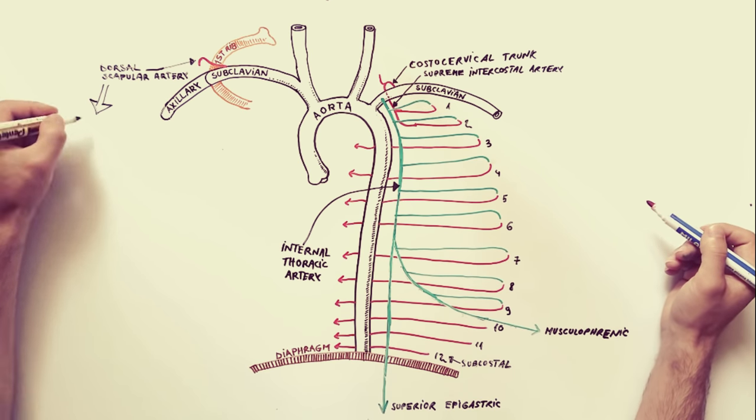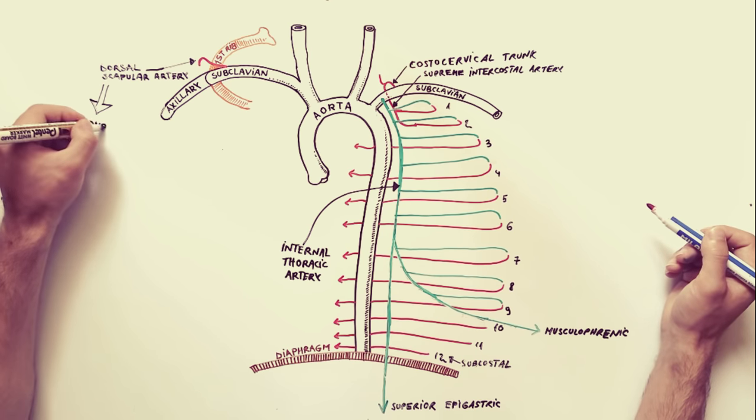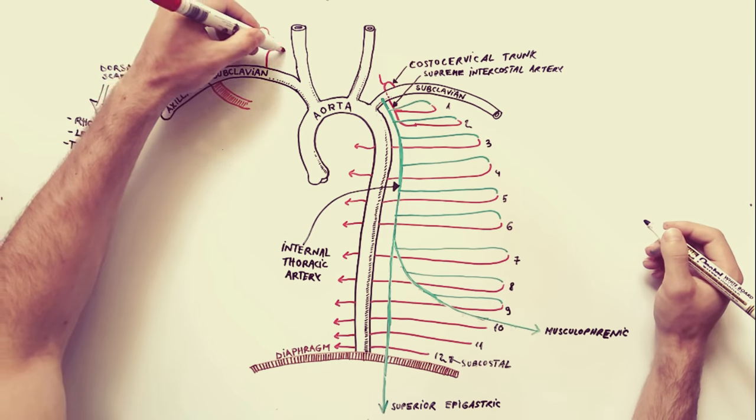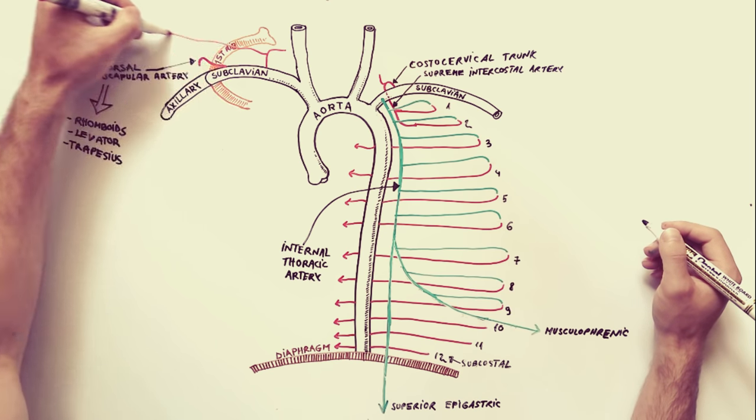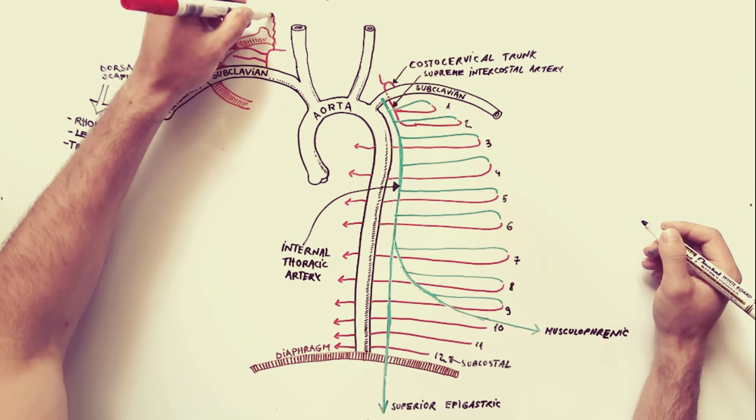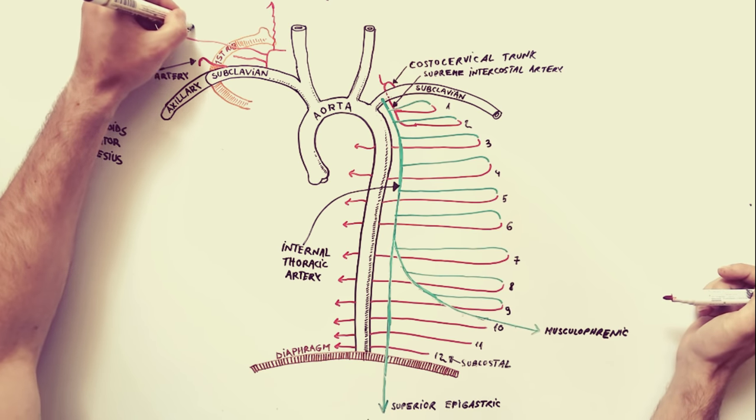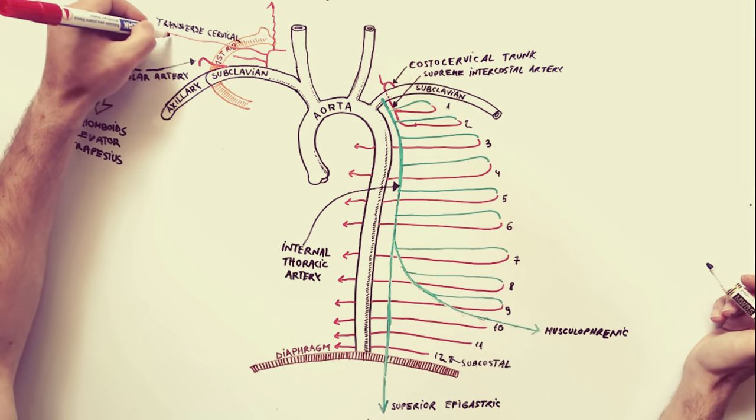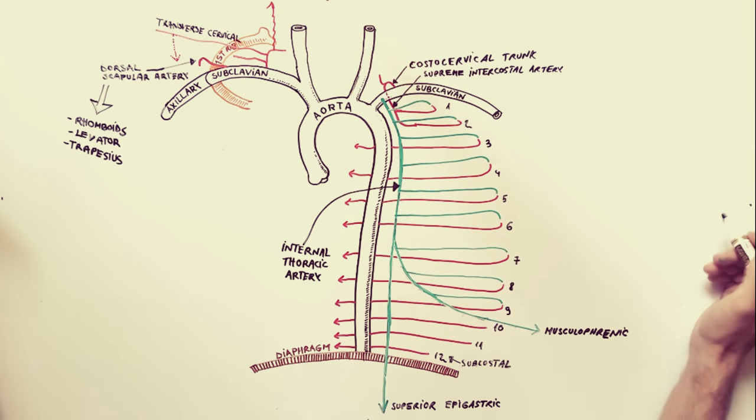It will supply the rhomboids, levator scapulae, and the trapezius muscles. Sometimes, the dorsal scapular artery can arise from the transverse cervical artery. As you know, the transverse cervical artery is a branch of the thyrocervical trunk.